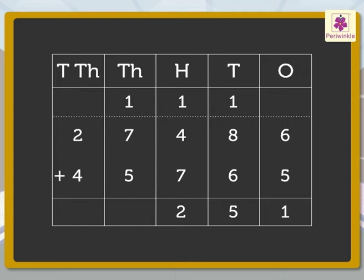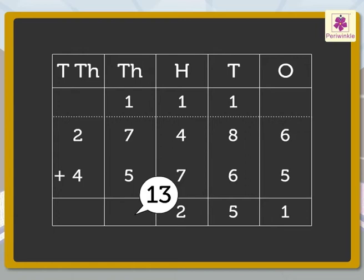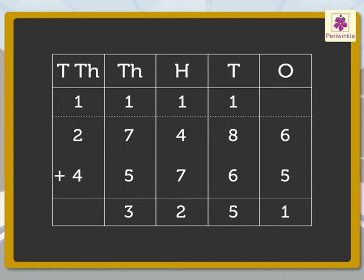Next, add the numbers in the thousands column: 1, 7 and 5. We get 13. Regroup 13 thousands to 1 ten thousand and 3 thousands. Carry the 1 ten thousand to the ten thousands column and write 3 in the thousands column.